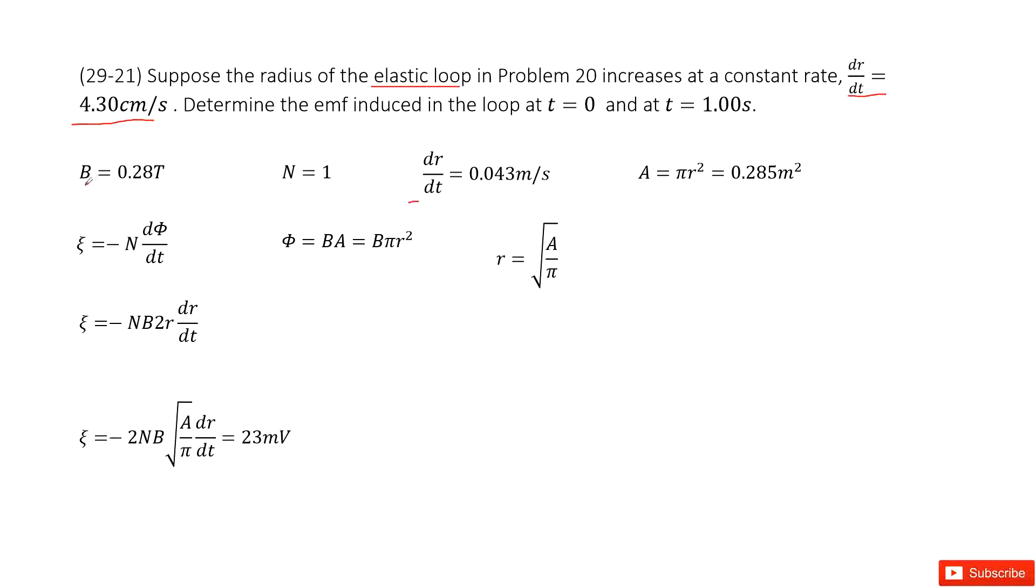So in problem 20, we know the B magnetic field is given as 0.28 T. And then how many turns for this loop? Just one loop, N equal to 1. And ask you to find the induced emf.